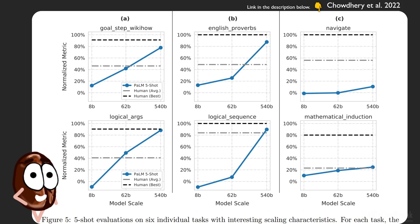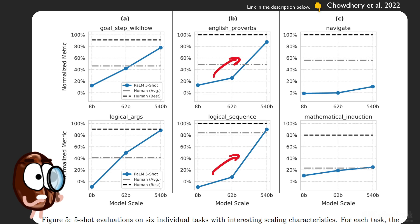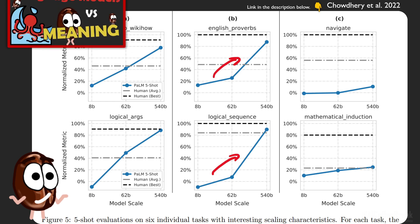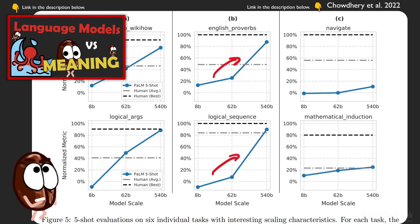Now, with PaLM in this few-shot learning setting, there are six tasks where we can observe a discontinuous improvement with scale — a certain size where the model suddenly gets it with enough parameters. With enough scale, the capability of solving logical sequences just emerges. Is this understanding? I have no idea. But with English proverbs, one might assume that enough parameters are enough to memorize the proverbs. Honestly, no idea. I wonder if there is anybody in this world understanding what kind of understanding happens in these models. We observe these discontinuous jumps, but do we really know why they happen? Honestly, no.